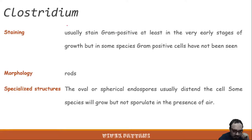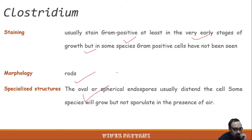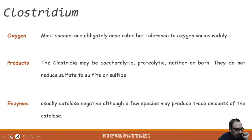Clostridium is basically anaerobic and usually gram-positive, at least in early stages of growth. In some species, gram-positive staining has not been observed. Morphologically they are rod-shaped and produce endospores that are oval or spherical and usually distend the cell. Some species can grow but not sporulate in the presence of air. Most Clostridium species are obligately anaerobic.